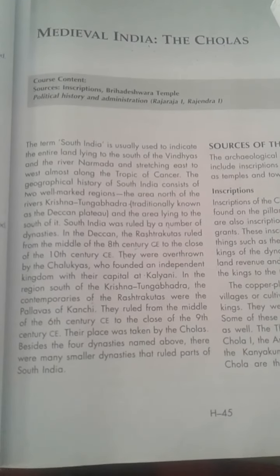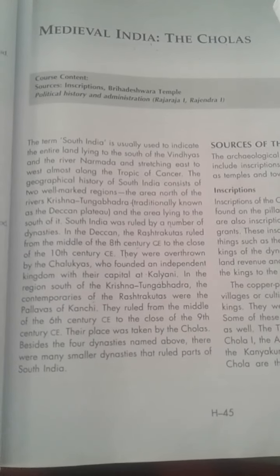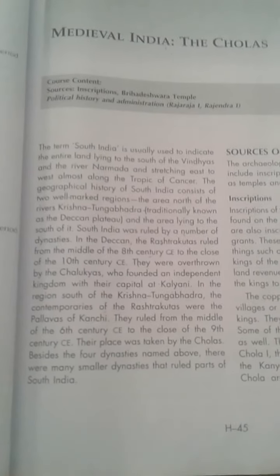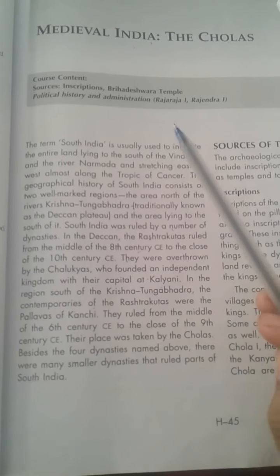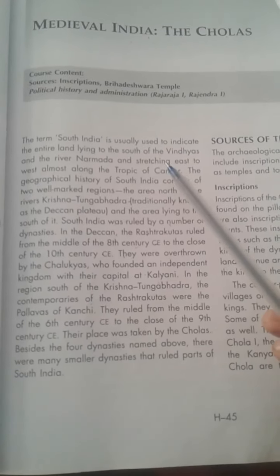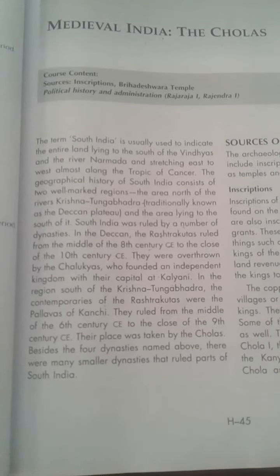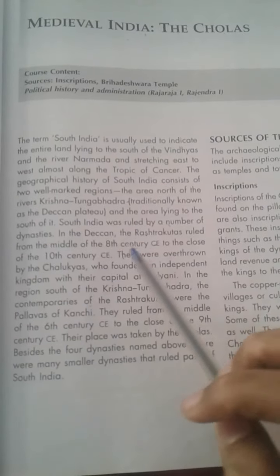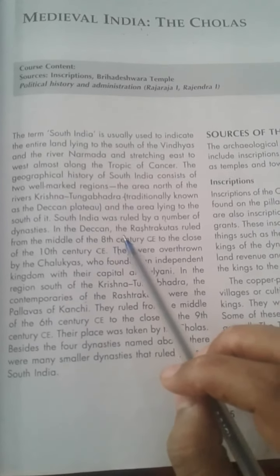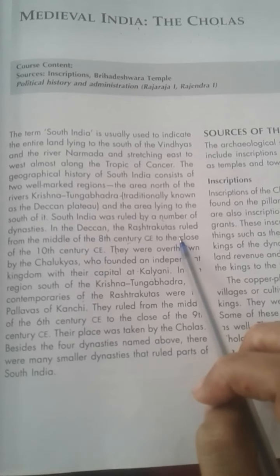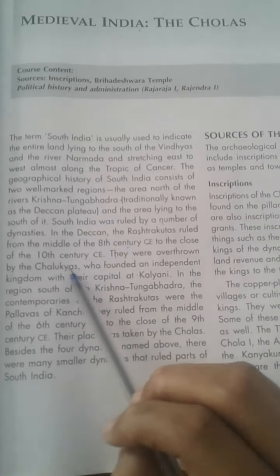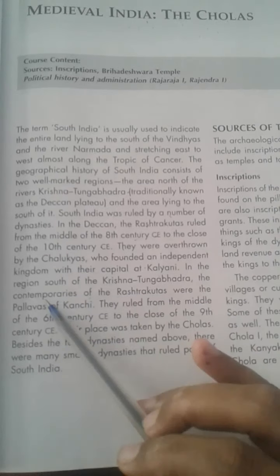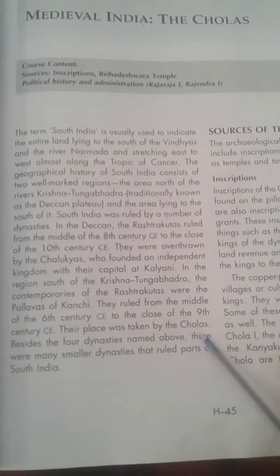Along with these, some smaller dynasties also ruled in parts of South India. The four main dynasties that ruled over South India were the Rashtrakutas, the Chalukyas, the Pallavas, and the Cholas.